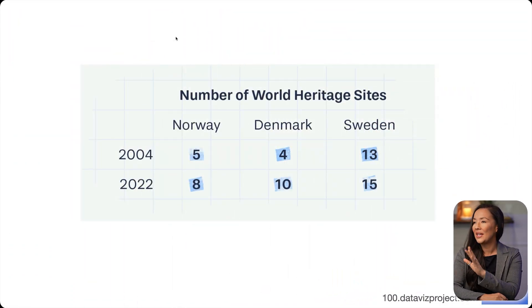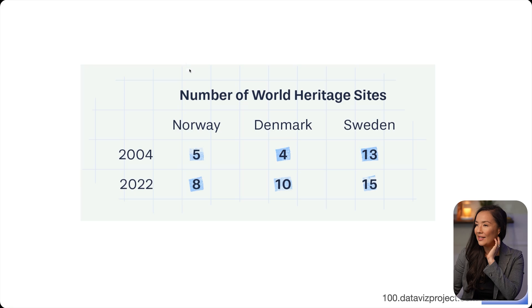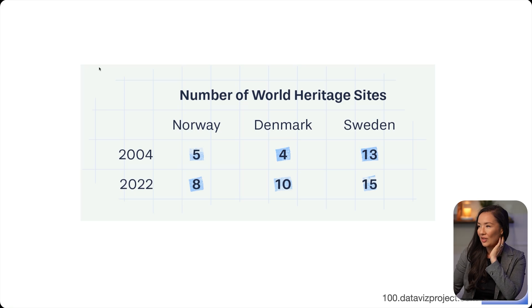Stick around if you want to learn what an encoding channel is, which encoding channels are better, and how to use them in your data visualizations. Let's begin with an example. Here we have a data set showing the number of World Heritage sites in Norway, Denmark, and Sweden for two different years.